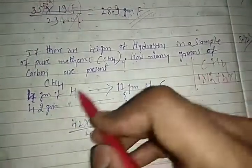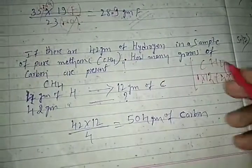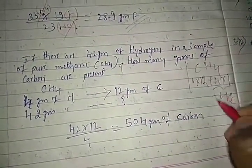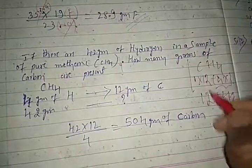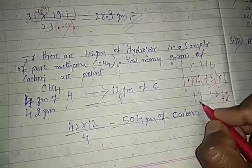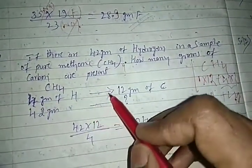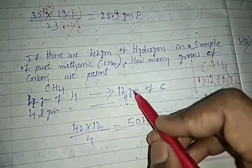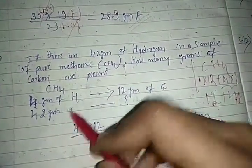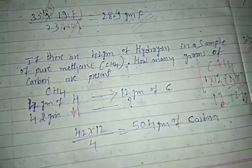So we write: 4 grams of hydrogen bonds with 12 grams of carbon. Now, 42 grams of hydrogen bonds with how many grams of carbon?